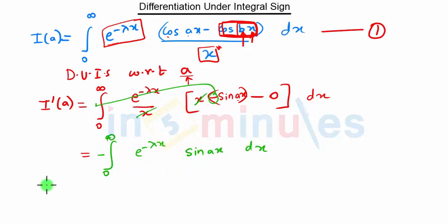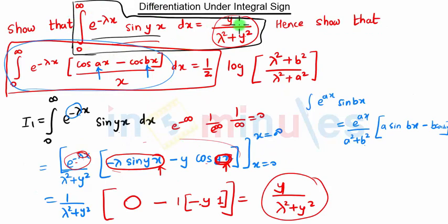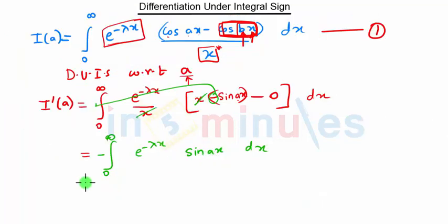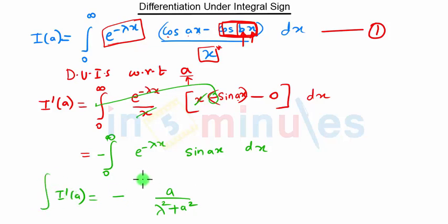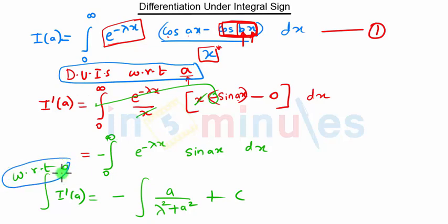This integral matches the form of I₁ proved earlier. With y replaced by a, we get I'(a) = −a/(λ² + a²). Since we want I(a) and not I'(a), we integrate both sides with respect to a, giving I(a) = −∫ a/(λ² + a²) da.